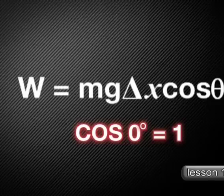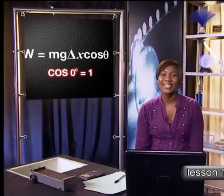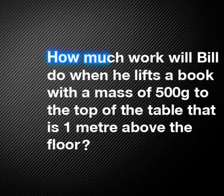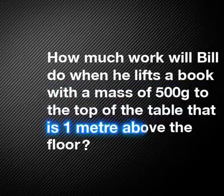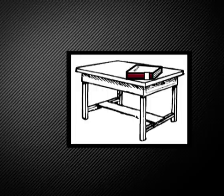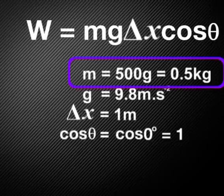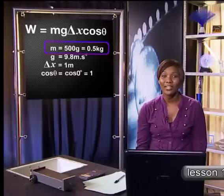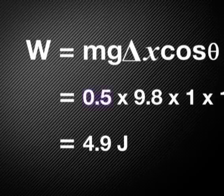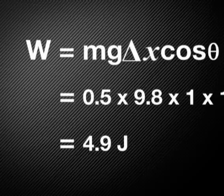Let's apply this equation to a physics problem. How much work will Bill do when he lifts a book with a mass of 500 grams to the top of a table that is one metre above the floor? Here is a diagram of the problem. Using work equals mass times gravitational acceleration times displacement times cosine theta, and remembering that 500 grams converts to 0.5 kilograms, we substitute to get: 0.5 times 9.8 times 1 times 1. The work done by Bill is 4.9 joules.